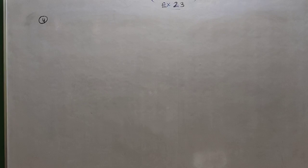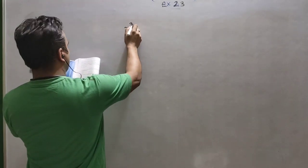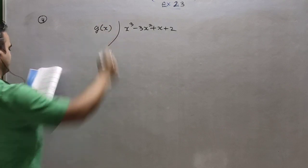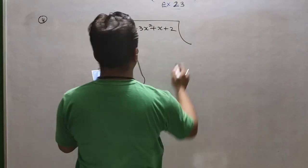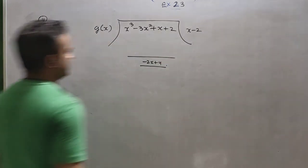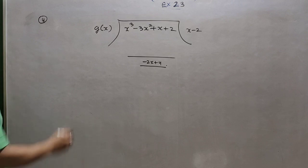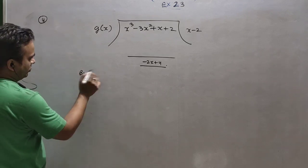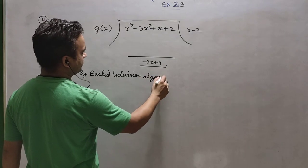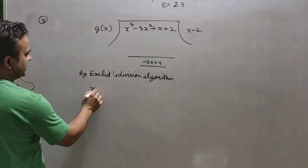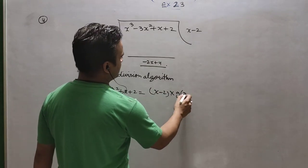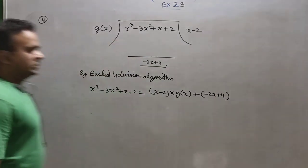In question number 4, x cubed minus 3x squared plus x plus 2, when divided by g(x), we get a quotient and remainder. The quotient is x minus 2 and the remainder is minus 2x plus 4. How can we find g(x)? Do you know Euclid's division algorithm? The division algorithm states: dividend equals quotient into divisor plus remainder.